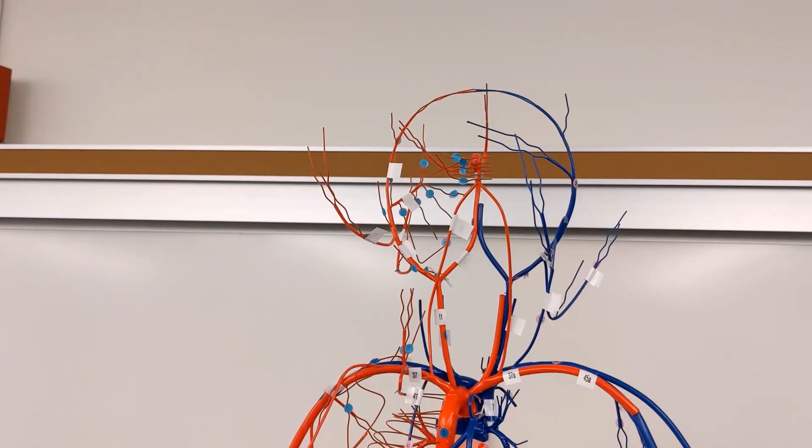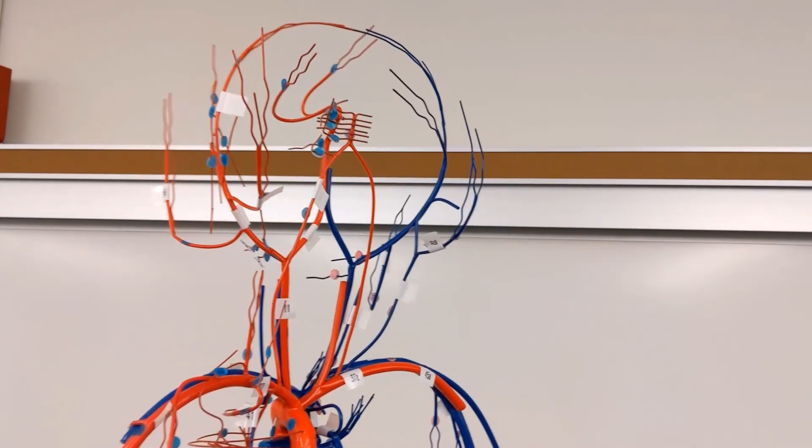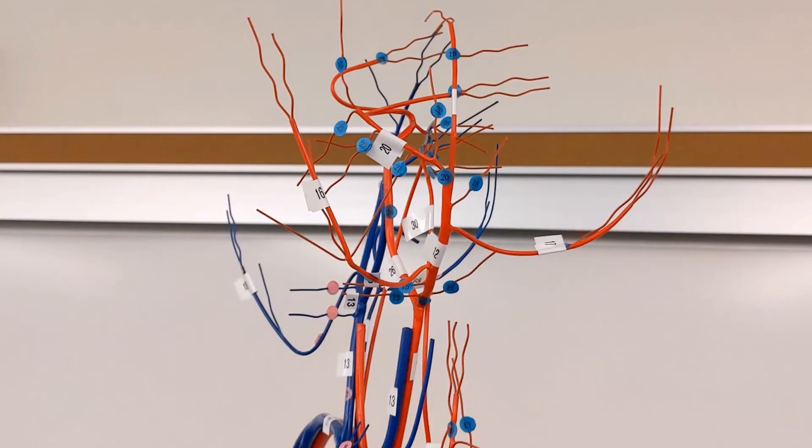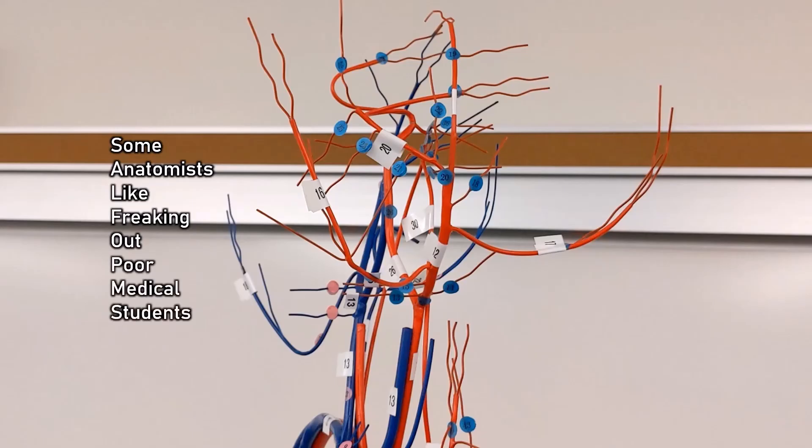To talk about the branches of the external carotid, it's easiest if we look at him from a side view. Now that we can see all of the branches, we can use the mnemonic: some anatomists like freaking out poor medical students.